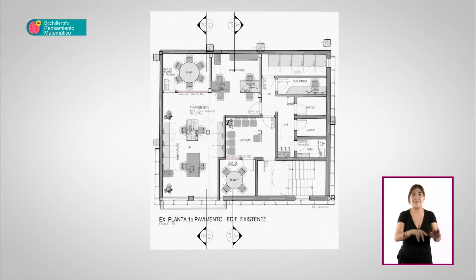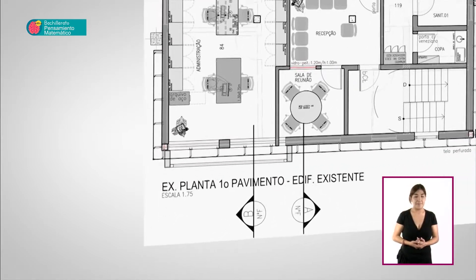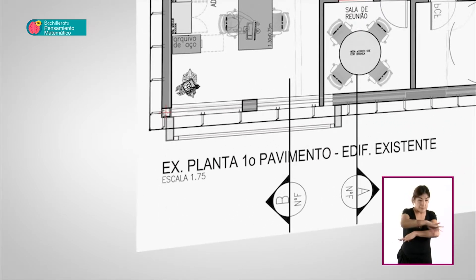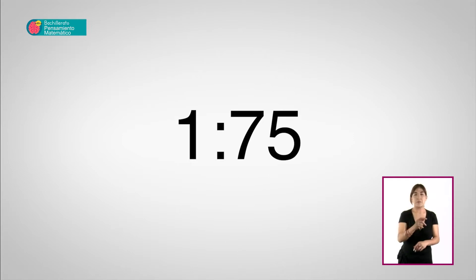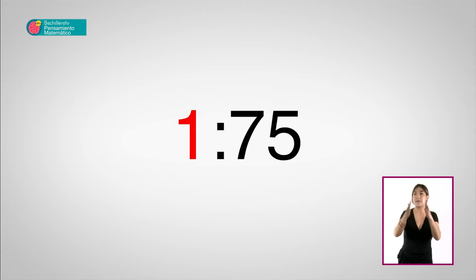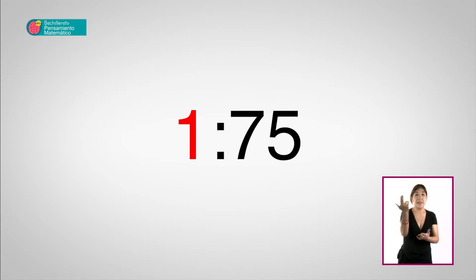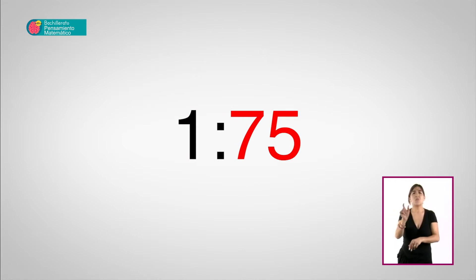La escala, entonces, indica una proporción: la relación entre las dimensiones reales del objeto y las de la imagen. La escala está definida por dos números que determinan esta relación, por ejemplo, entre un plano y la casa que se va a construir. El primer número se refiere al dibujo en el papel. El segundo número se refiere a la realidad del objeto, a su auténtica medida.